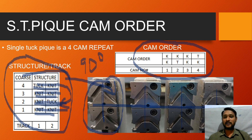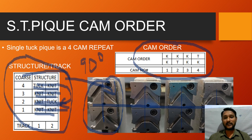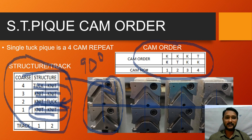If you want to advise your knitter to follow the cam order, you can mention it this way: cam number 1 is knit-knit, cam number 2 is knit-knit, cam number 3 is again knit-knit, and cam number 4 is tuck-knit. This is how the cam order is made.